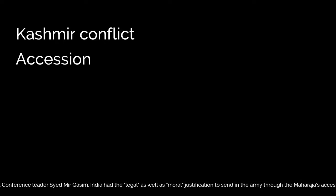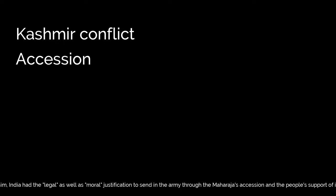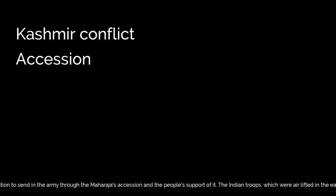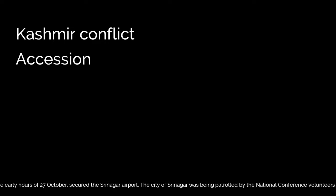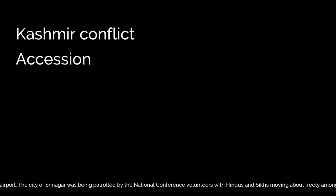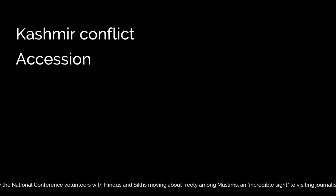The Indian troops, which were airlifted in the early hours of 27 October, secured the Srinagar airport. The city of Srinagar was being patrolled by National Conference volunteers, with Hindus and Sikhs moving about freely among Muslims — an incredible sight to visiting journalists. The National Conference also worked with the Indian Army to secure the city.